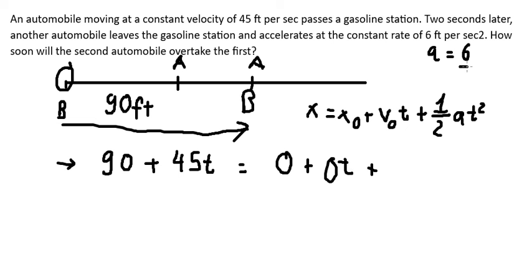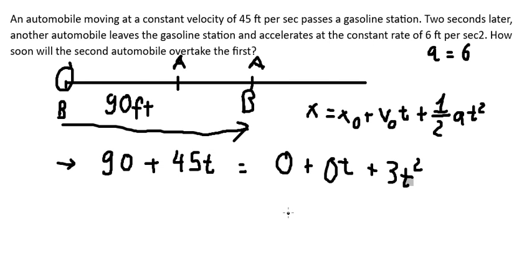And acceleration is about 6, so 6 multiplied by one-half, we have 3. Now in this one, we put 90 and 45t on the right.